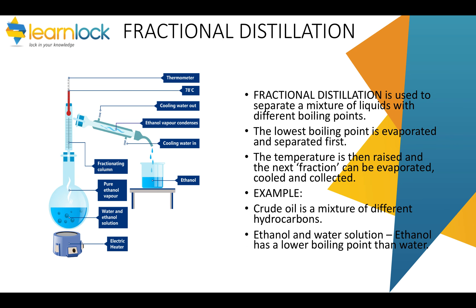You can also use fractional distillation, which separates a mixture of liquids with different boiling points. You start with the lowest boiling point, evaporate that fraction, and then keep raising the temperature to collect the next fraction. This is how crude oil is separated on a large scale. It can also be used to separate ethanol and water — because ethanol has a lower boiling point than water, it is heated and separated off first at about 78 degrees.